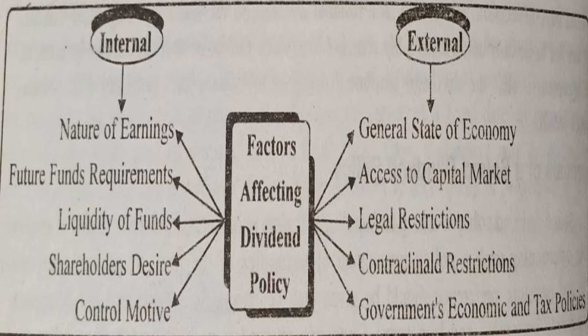Nature of industry also affects dividend policy. If a firm is in the necessity goods sector, they have more stable income than those dealing in luxuries and fancy goods. So nature of earnings depends on the firm's nature and firm's policies, and they affect the dividend policy.